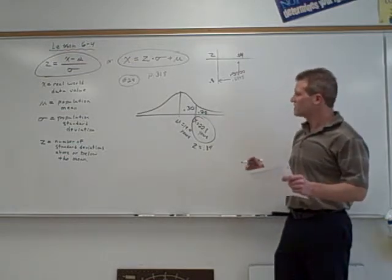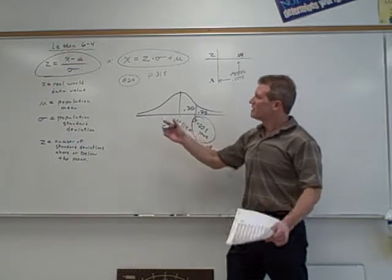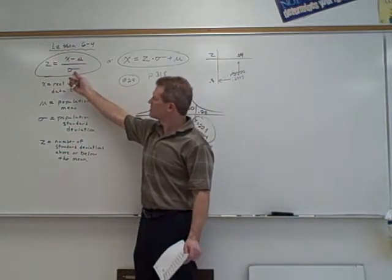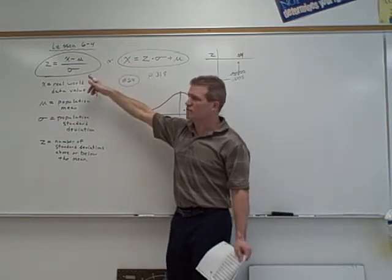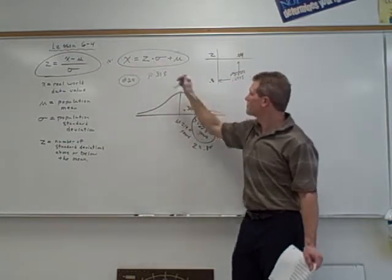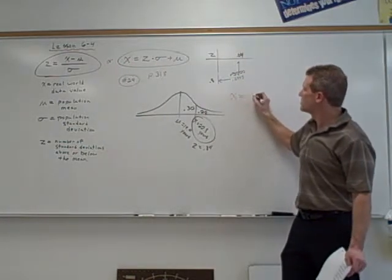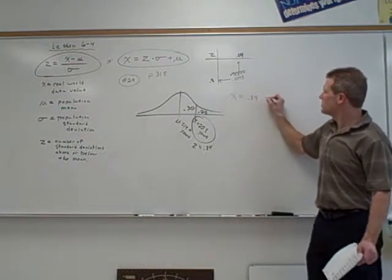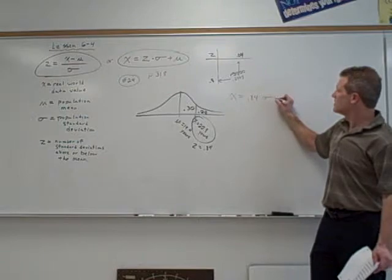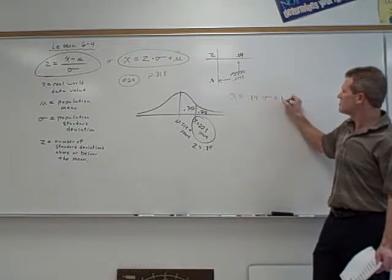Now, what we're trying to find is standard deviation. That's the symbol, long-case sigma. You can use either formula here. I try to avoid the one with fractions usually. So x equals my z-score, which is 0.84, times my standard deviation, which is what I'm trying to find, plus my mean, which is 19.4.